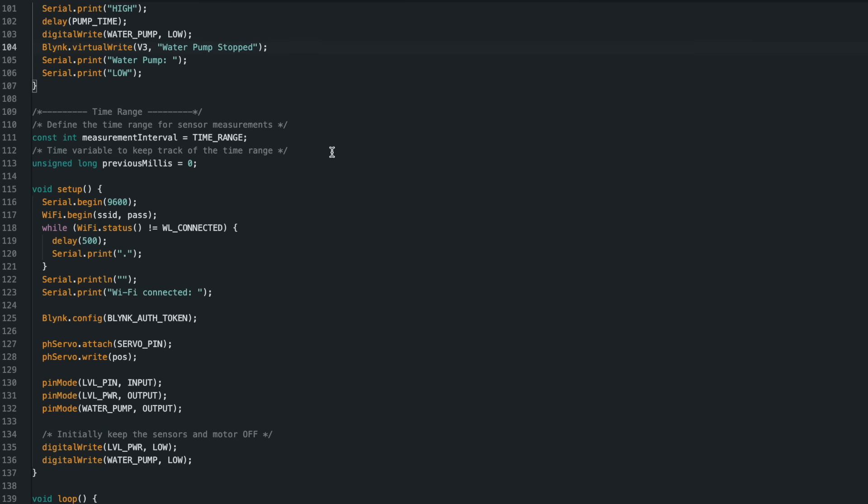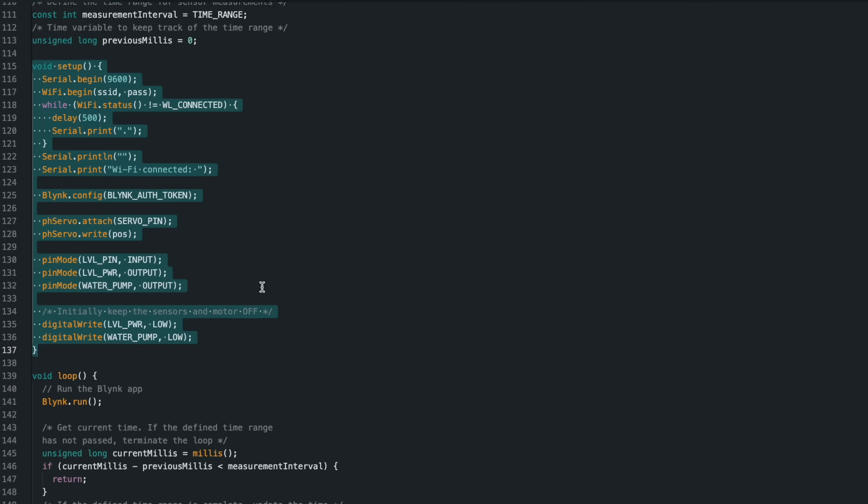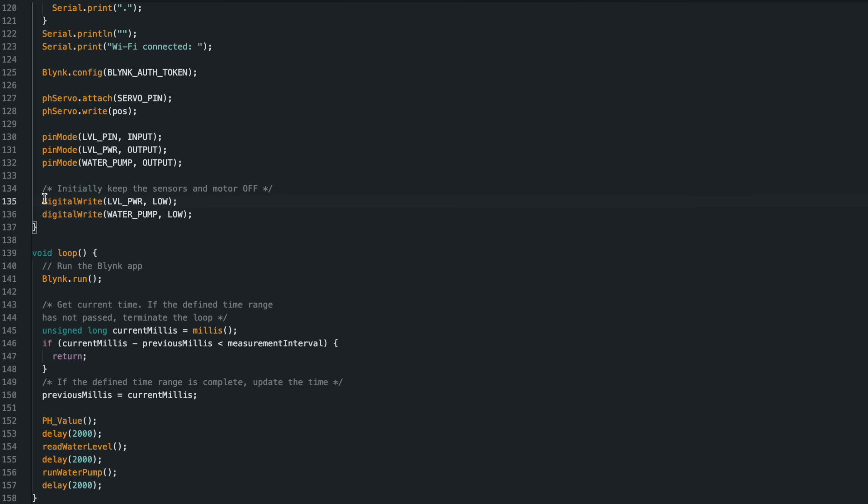Before the setup section, two variables were defined to track and reset the time interval. In the setup section, the standard network connection and serial communication protocol are initialized, and blink settings are defined. Finally, pin modes and pin states are specified.